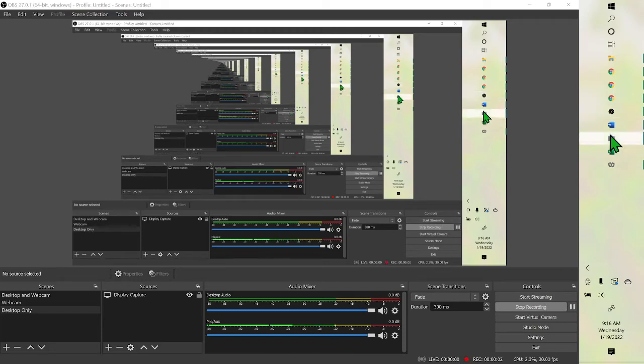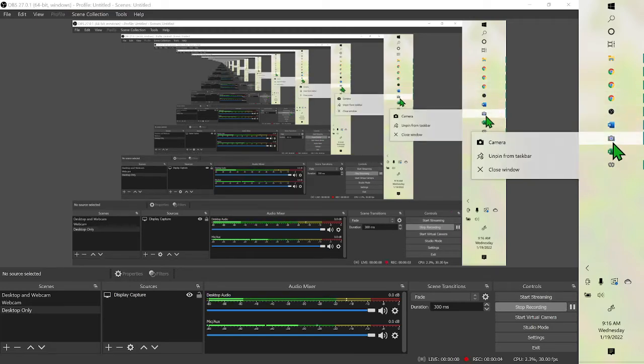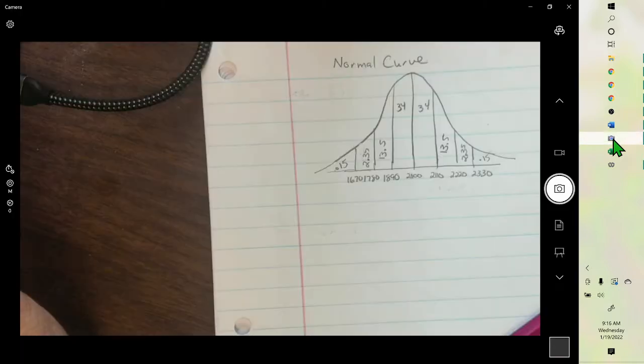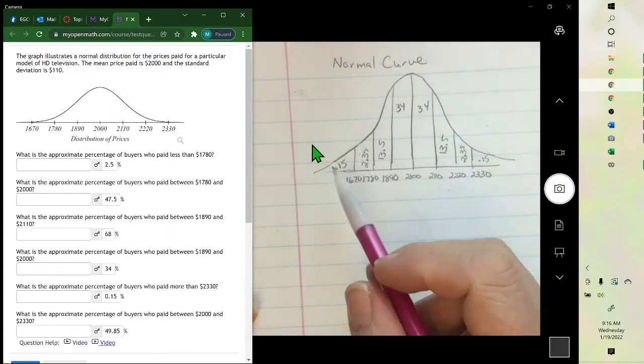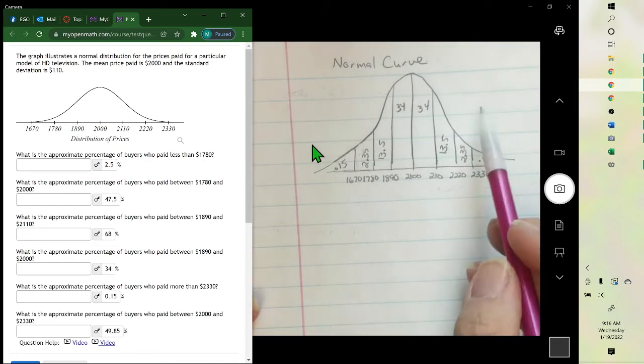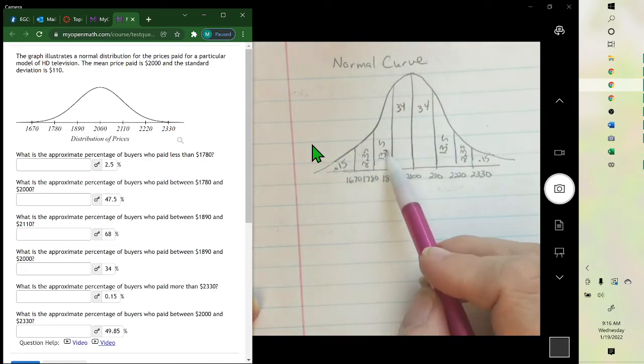Hello. For this problem, we're talking about a normal distribution. A normal distribution is this curve, and these percents will always be the same. So this is the percent under each curve.